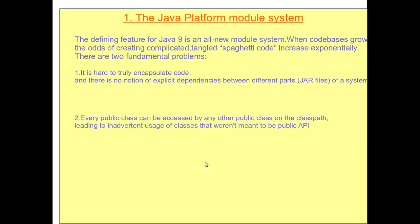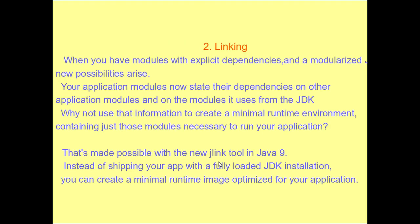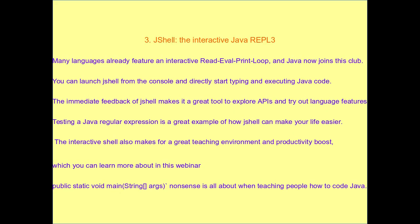Java Platform Module System: fundamentally there are two problems. One is it's hard to properly encapsulate code. Next, every public class can be accessed by another public class on the class path. Second, when you have explicit dependency and modularization, new possibilities are raised.